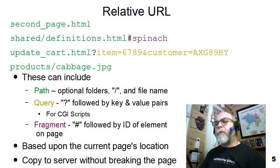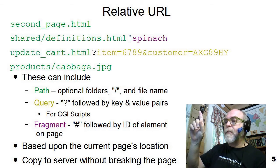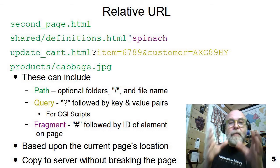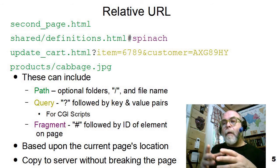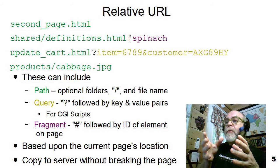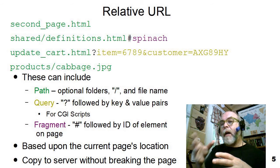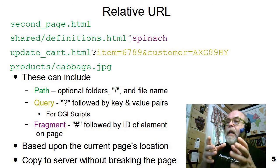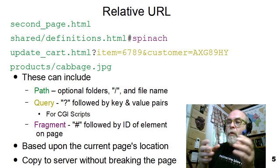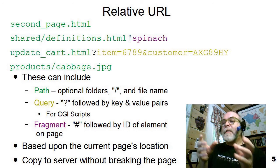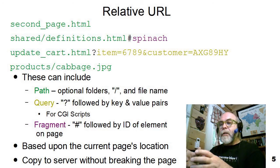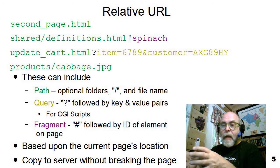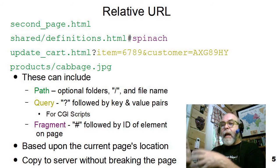Another URL example is update_cart.html, which says in the same folder you'll find a document called update cart, and we'll pass it item with the number 6789 and customer with AXG89HY. It's going to take those data bits and send them to that page as it loads, and the server and the CGI script on the server will manipulate that data and possibly add it to the shopping cart.